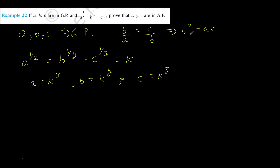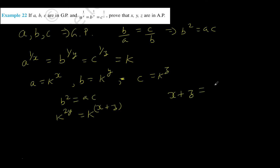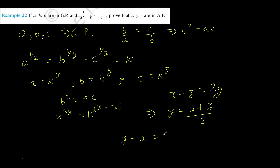Now using the relation B squared equals AC: B squared is K to the power 2Y, and AC is K to the power X times K to the power Z, which is K to the power (X plus Z). Therefore X plus Z equals 2Y, or Y equals (X plus Z) by 2. So Y is the arithmetic mean of X and Z, meaning Y minus X equals Z minus Y, and therefore X, Y, Z are in AP.